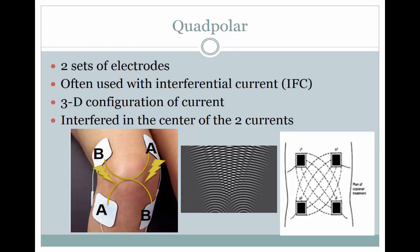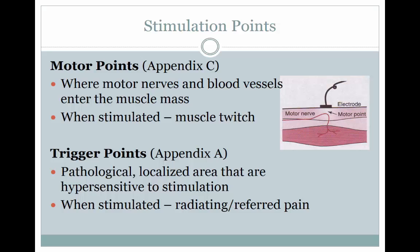If a clinician is attempting to target certain tissues, they may want to identify either motor points or trigger points. Motor points are specific points in the body where motor nerves and blood vessels enter the muscle mass; when stimulated, they result in a muscle twitch. Please consult Appendix C within the Starkey text to locate common motor points. Trigger points, on the other hand, are pathological localized areas that are hypersensitive to stimulation; when stimulated, they result in radiating or referred pain. Please consult Appendix A within the Starkey text, and also box 12-3 on page 226.